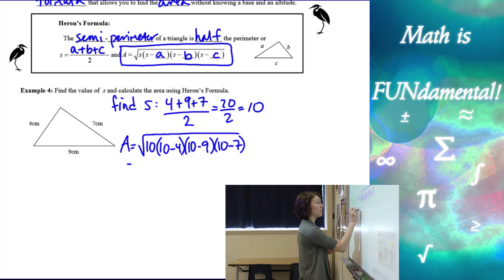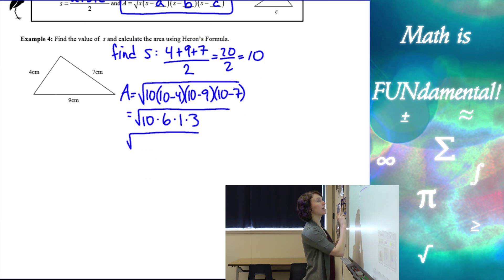So I have the square root of 10 times six times one times three. So now breaking it into primes, I have two times five and two times three times three. And then I can simplify my square root.